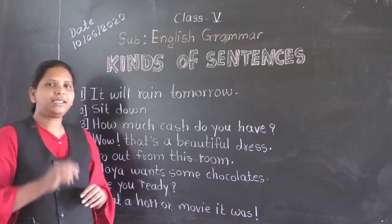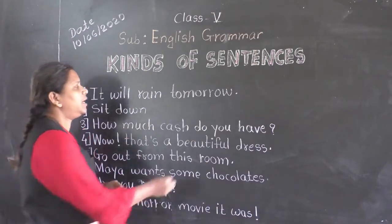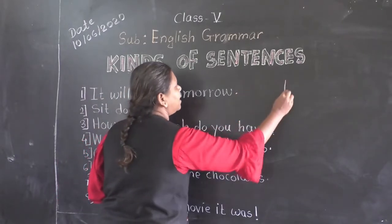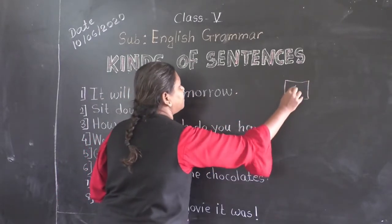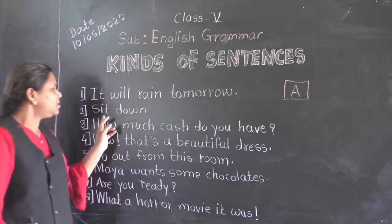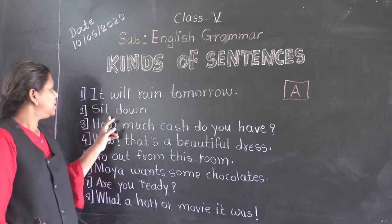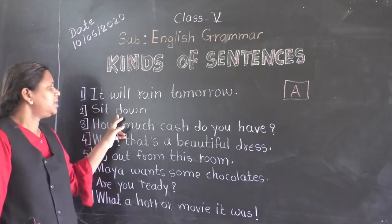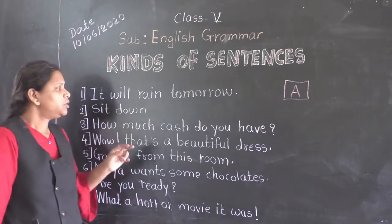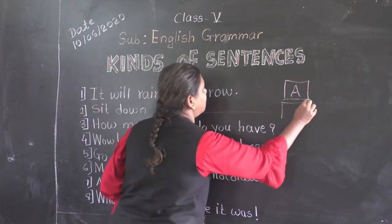It is an assertive sentence, so here in the bracket we will write E. Now see the second sentence: 'Sit down.' 'Sit down' is an imperative sentence, so here we will write IN.